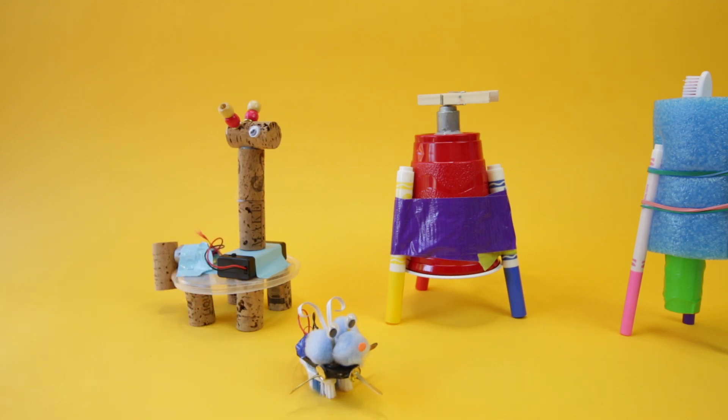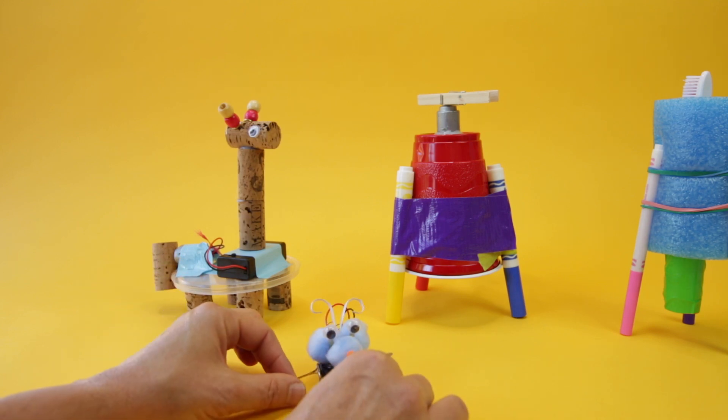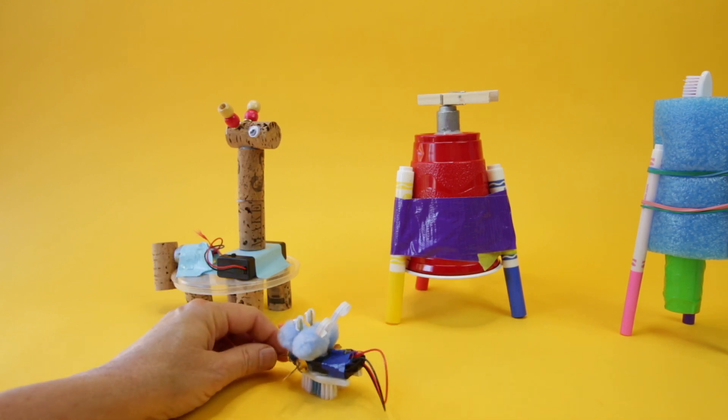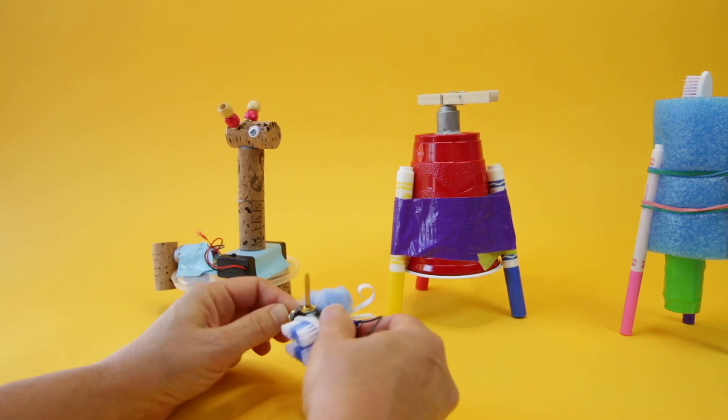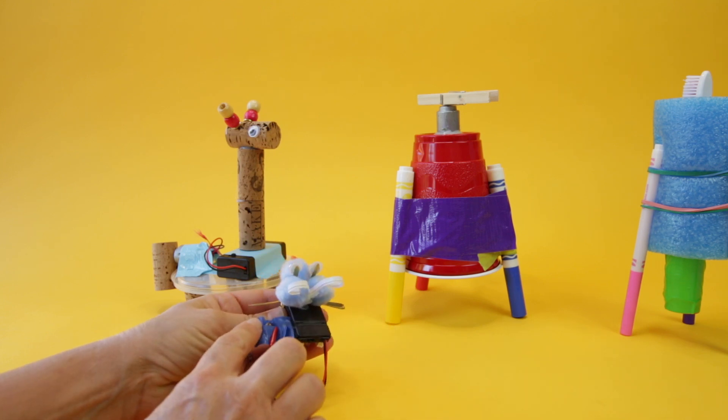So you're not really going to be able to control the way it moves that much. However, there are a few things that physically affect the way the bot moves, and you can change those and troubleshoot it to make it more like how you envision it. So with brush bots, the placement of the motor is critically important.